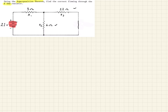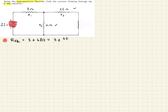Now we see we have a six ohm resistor in parallel with a twelve ohm resistor, and that's in series with a three ohm resistor. So we can solve this readily. First, we'll solve for the equivalent resistance — Req for the first source — which is three ohms plus six ohms in parallel with twelve ohms, giving us three plus six times twelve over six plus twelve.